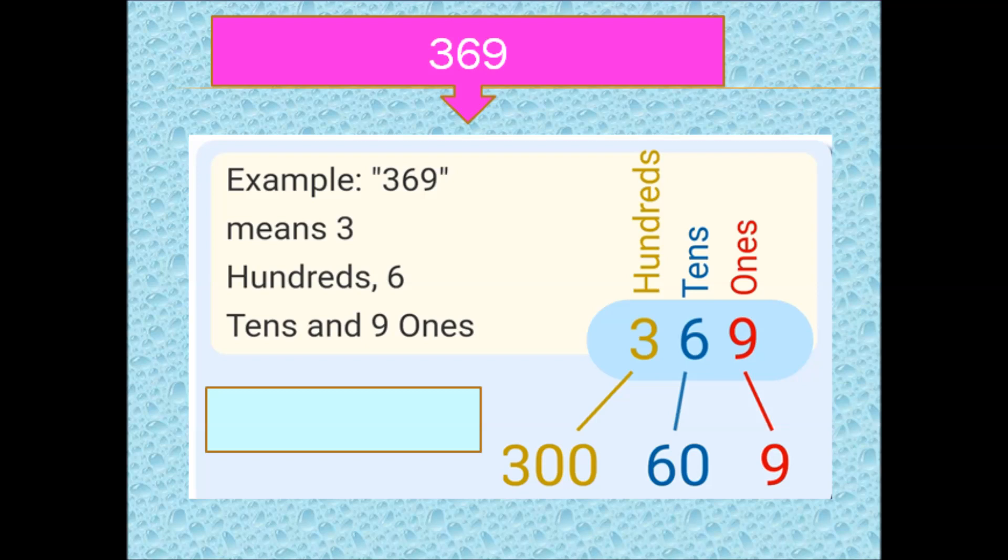The place value of number 6 is 60 or 6 tens and the place value of number 3 is 300.